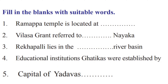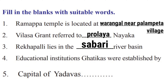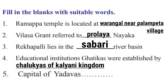Fill in the blanks with suitable words. First: Ramappa Temple is located near Warangal. Second: Villasa Grant referred to Prolaya Nayaka. Third: Rekapalli lies near the Sabari River Basin. Fourth: Educational institutions called Ghatikas were established by the Chalukyas of Kalyani Kingdom. Fifth: Capital of Yadavas is Devagiri.